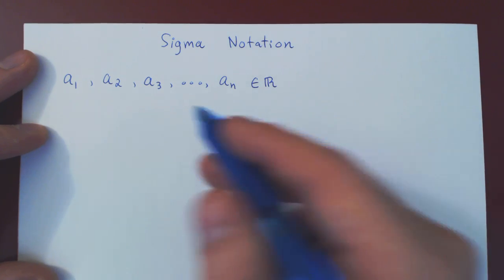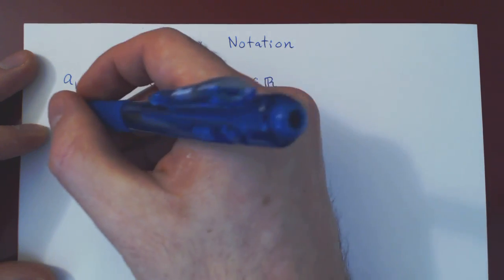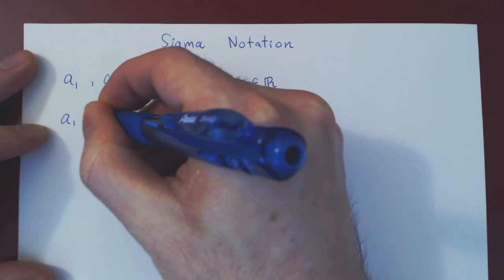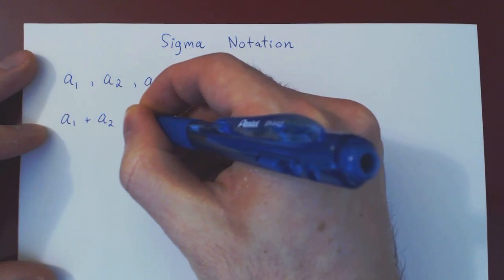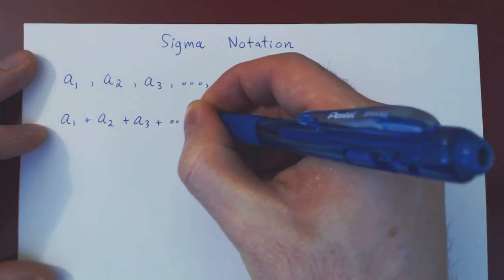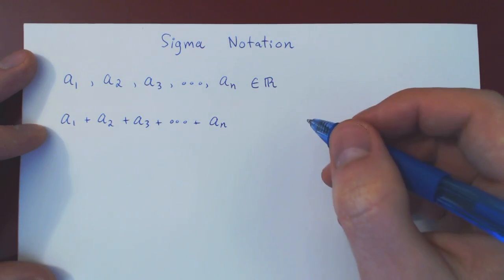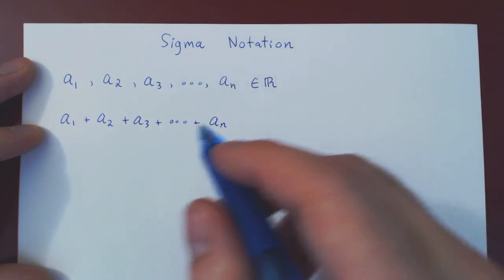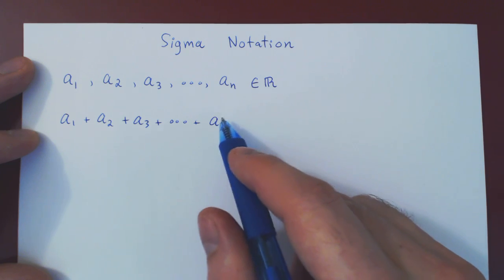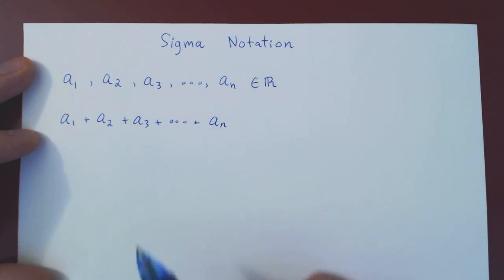Suppose I simply want to add these n real numbers: a₁ + a₂ + a₃ + ⋯ + aₙ. Now I want to find a different way of writing out this summation so as to write it more concisely, and also to avoid the dot dot dot.